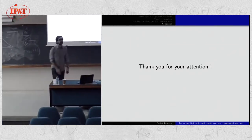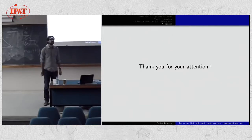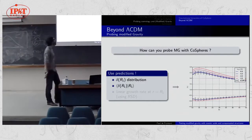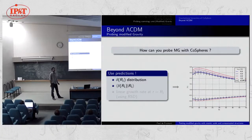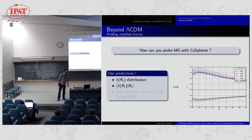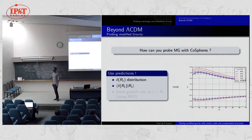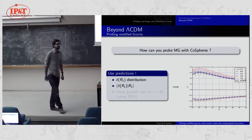Question: There is a clear effect between modified gravity and ΛCDM, but is there a distinguishable effect between modified gravity and clustering dark energy — say, if you transform the toy model to the Einstein frame? Response: I don't think so; I think it would be the same, though I'm not sure about it.